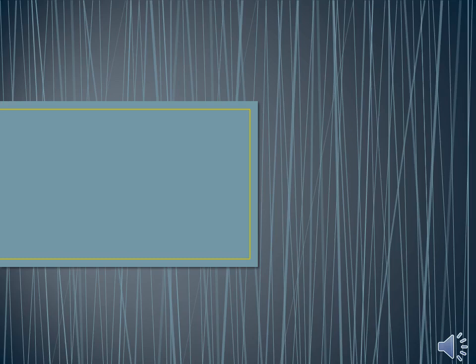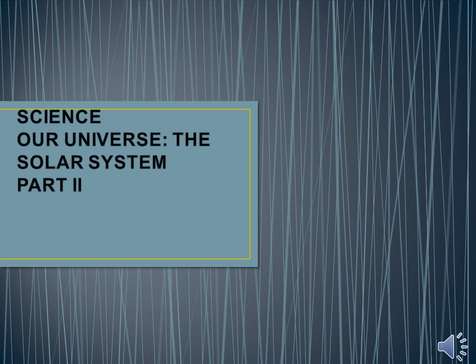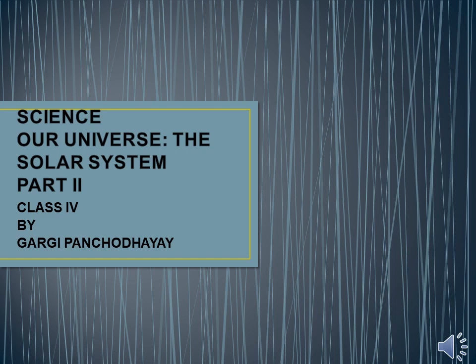Welcome to the science class, students. Today we are going to study the second part, or part two, of the chapter 'Our Universe: The Solar System.' All of you open page number 95 of your book. In the last part, part one, we finished up to the planets and the details of the planets. Now today we are starting with the topic: the Earth.